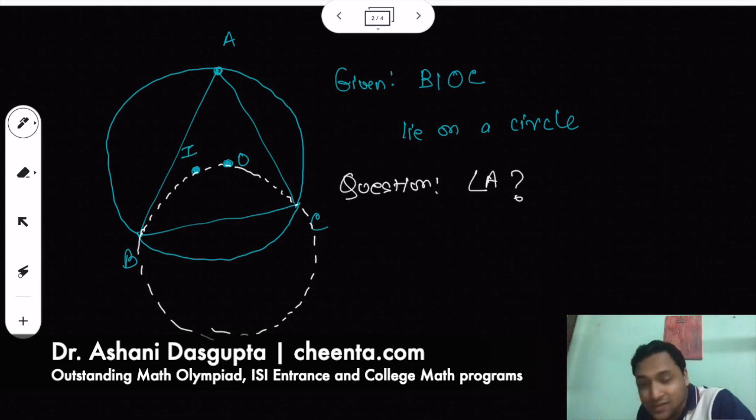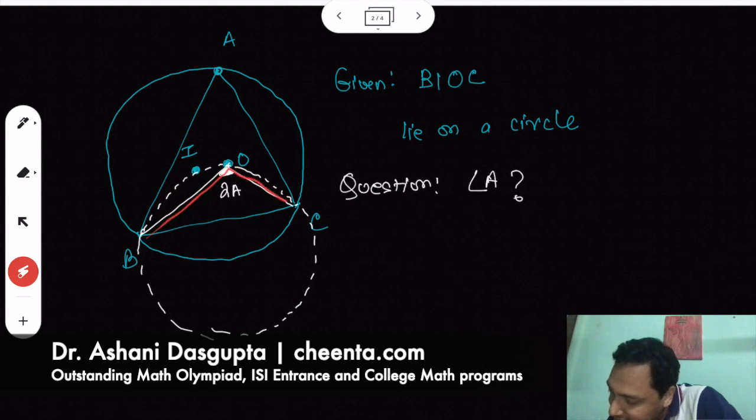So the first thing is that angle BOC - and you can try this by pausing the video - angle BOC is twice of angle A, right? We are using the first concept here that the angle at the center, you have to focus on this circle, the angle at the center is twice the angle at the circumference. So this is twice of angle A.